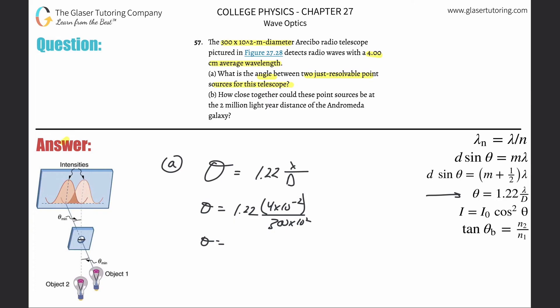Take out the calculator and plug it in: 1.22 times 4 times 10 to the minus 2 divided by 300 times 10 to the 2, and we get a value of about 1.63 times 10 to the minus 6.